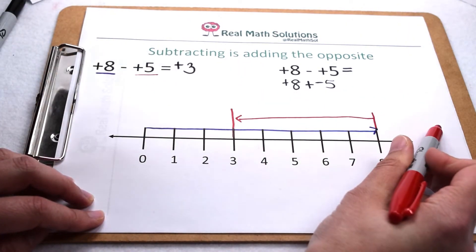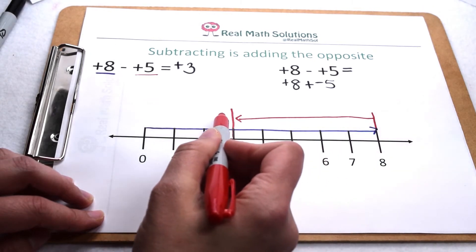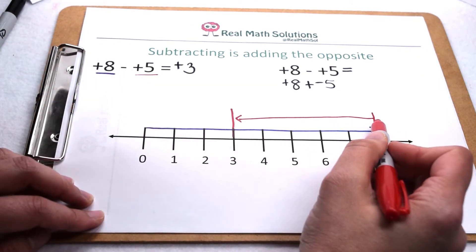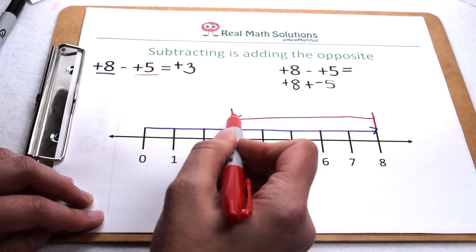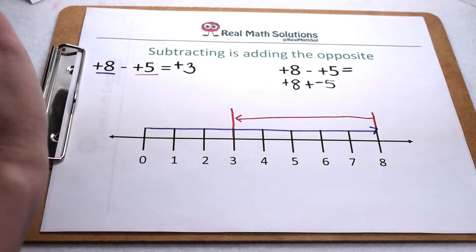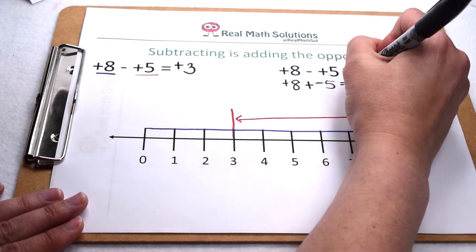If positive values send me to the right, negative values send me back to the left. So adding negative 5 would send me 5 places back to the left. That means we're still going to wind up at positive 3.